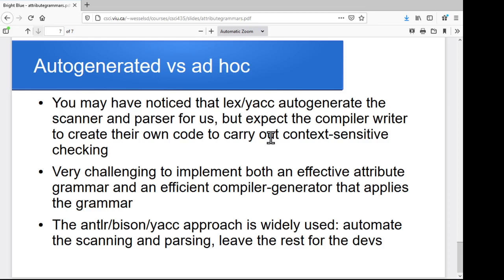And again, the idea is it's very challenging to come up with an effective attribute grammar and a compiler generator that can efficiently read that grammar and generate a compiler based on it. So this kind of antler, bison, Yacc approach is pretty common where even if you've got an automated tool for the scanning and the parsing, it's much less common to have automation for the context-sensitive side of things.